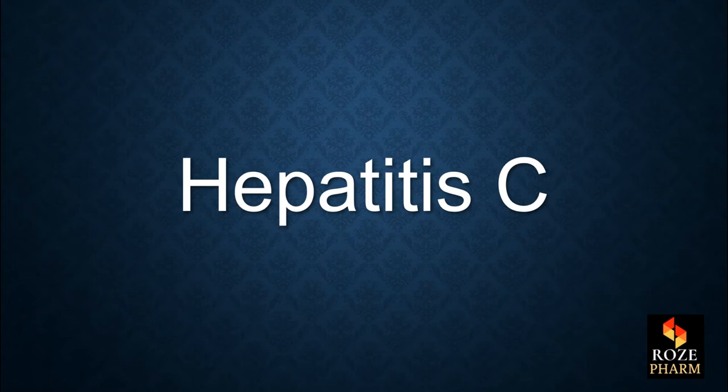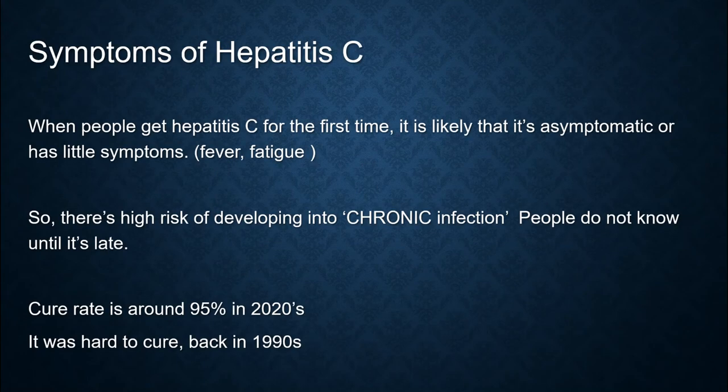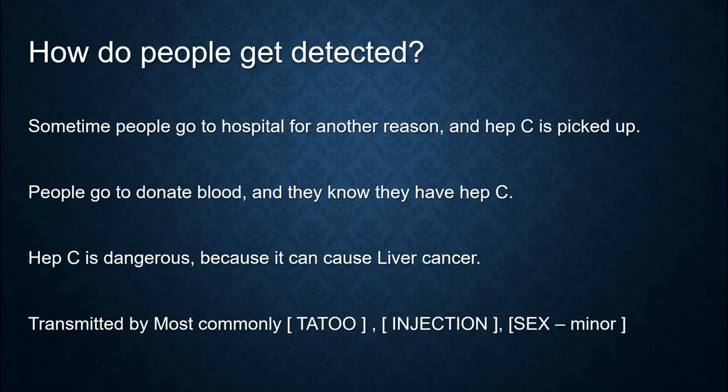Hepatitis C. Symptoms of hepatitis C — when people get it for the first time, it is likely asymptomatic or has little symptoms like fever or fatigue. So there is a high risk of developing into chronic infection, and people do not know until it is too late. However, the cure rate is around 95%, but it was really hard to cure back in the 1990s. Sometimes people go to a hospital for another reason and hepatitis C is picked up incidentally.